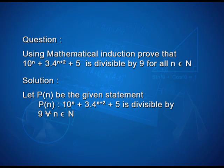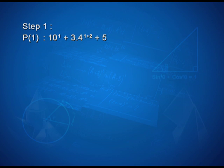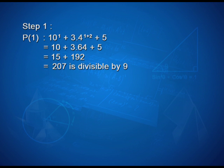For the solution, let P(n) be the given statement. P(n) is: 10 to the power n plus 3 into 4 to the power n plus 2 plus 5 is divisible by 9 for every n belonging to n. In the first step, P(1) is 10 plus 3 into 64 plus 5, which gives 15 plus 192, which is 207, and is divisible by 9. That shows that P(1) is true.